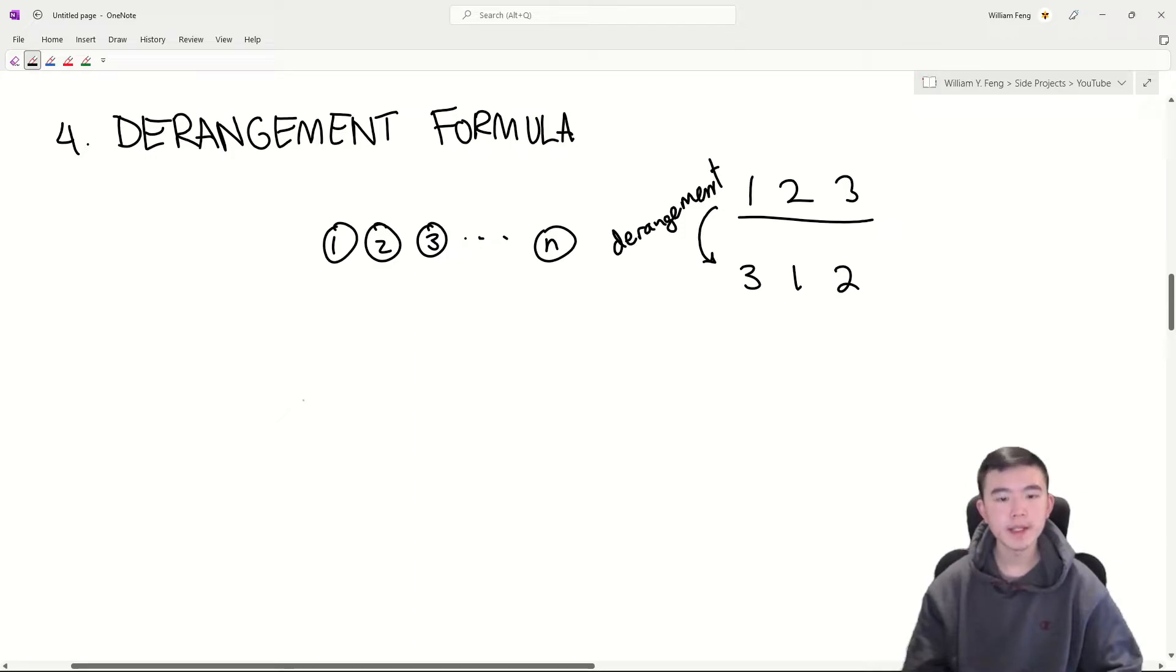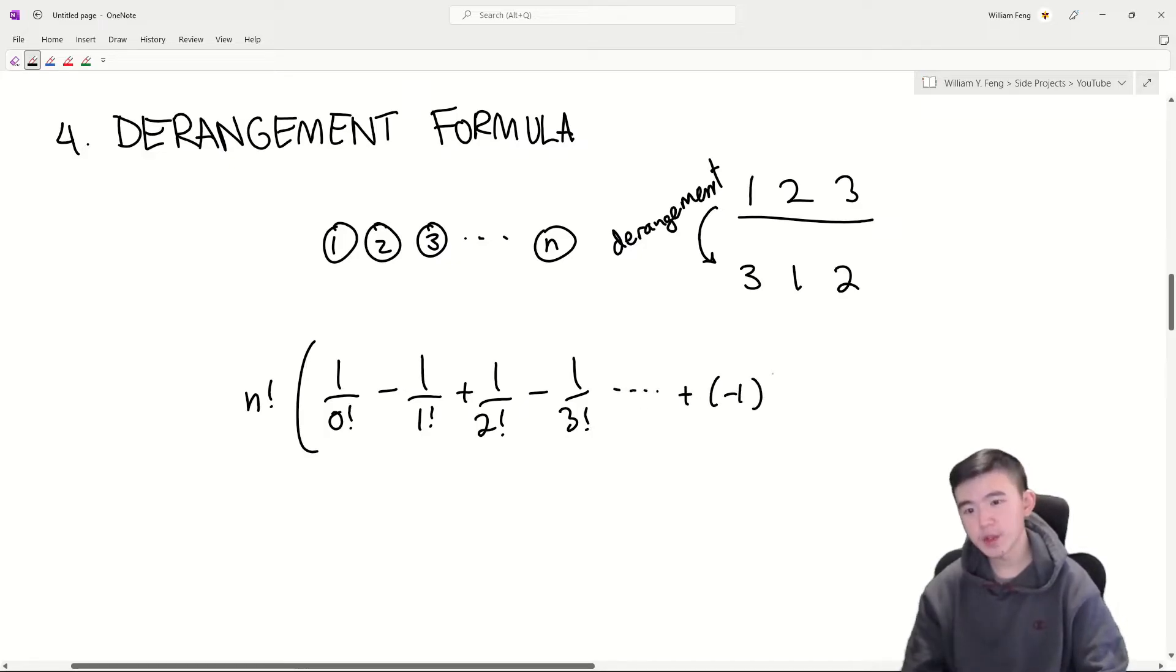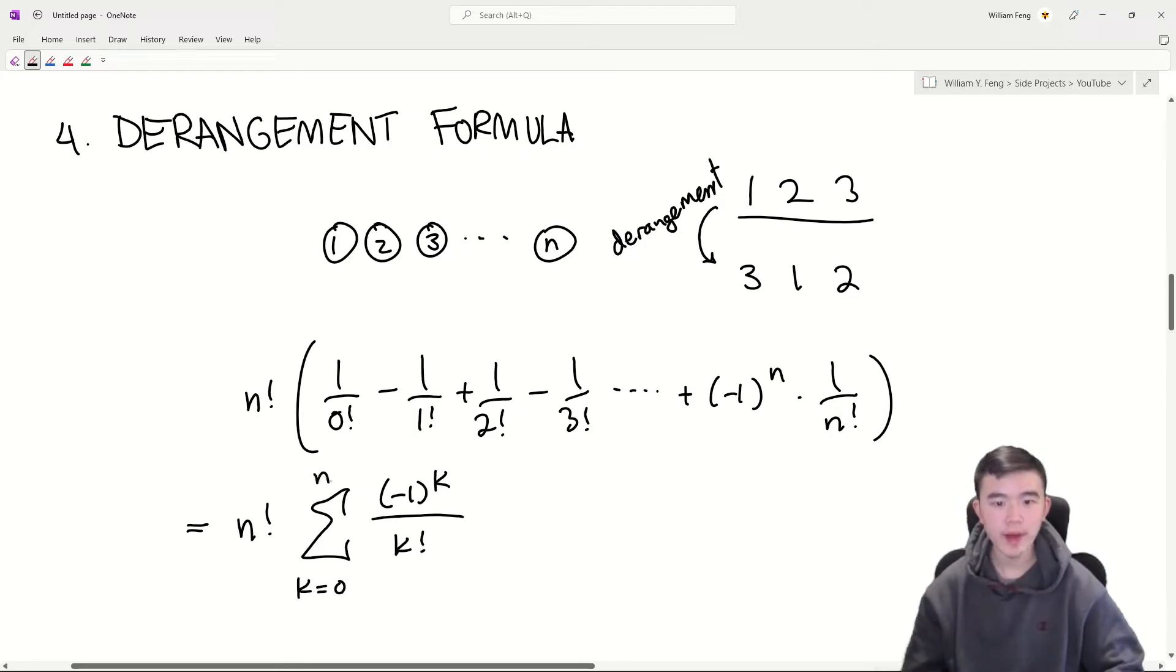The derangement formula tells us that the number of ways to do this is equal to n factorial times 1 over 0 factorial minus 1 over 1 factorial, plus 1 over 2 factorial minus 1 over 3 factorial, and so on, plus negative 1 to the n times 1 over n factorial. Written more concisely, this is equal to n factorial times the sum of negative 1 to the k over k factorial for k ranging from 0 to n.